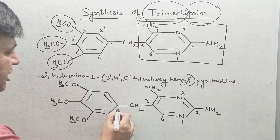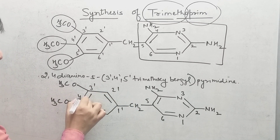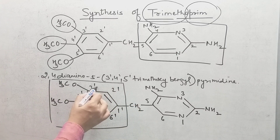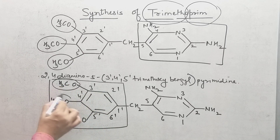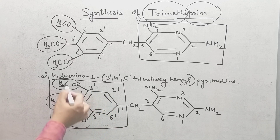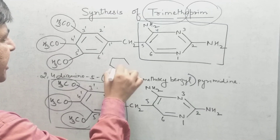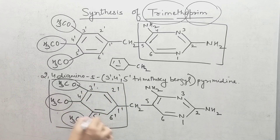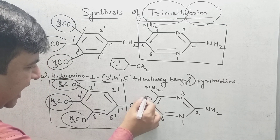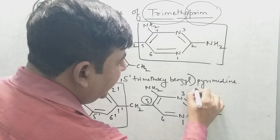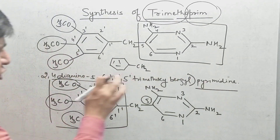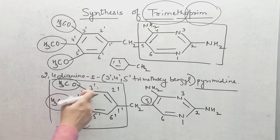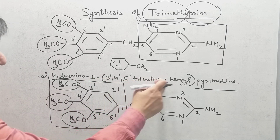For naming, the second part of the structure is 3,4,5-trimethoxybenzyl — where benzene attached with CH2 is called benzyl. All the groups are attached at the fifth position of pyrimidine, so the name includes: pyrimidine at the fifth position containing 3,4,5-trimethoxybenzyl.